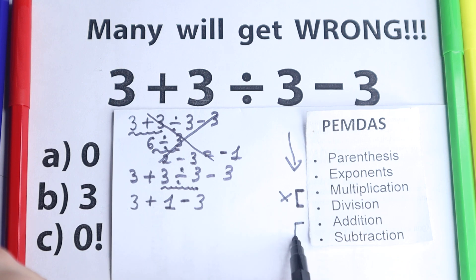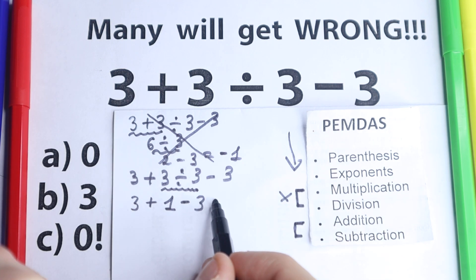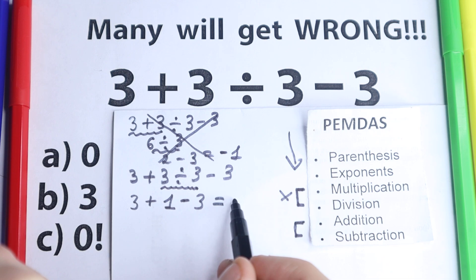The next step: addition and subtraction. Moreover, you don't need to know about PEMDAS at the end because addition and subtraction is very obvious. 3 plus 1, we have 4. 4 minus 3 equals 1.